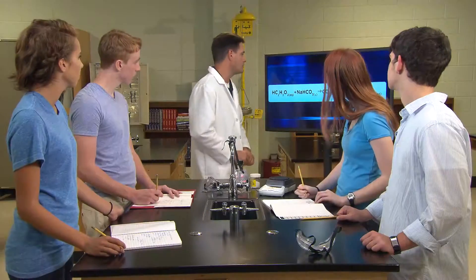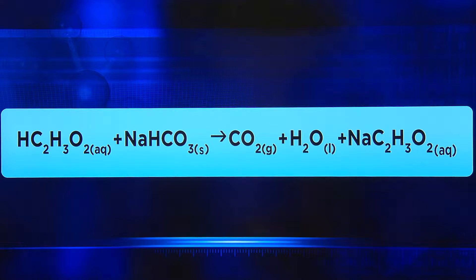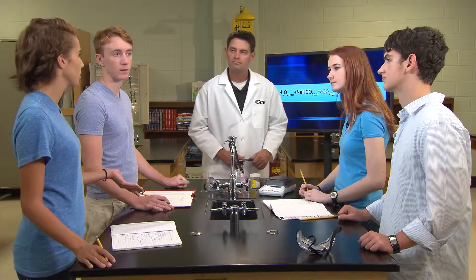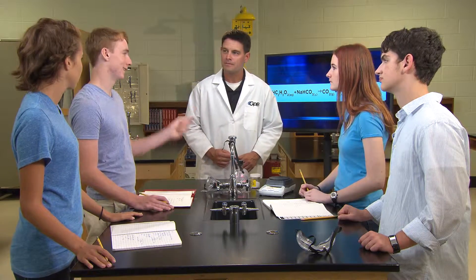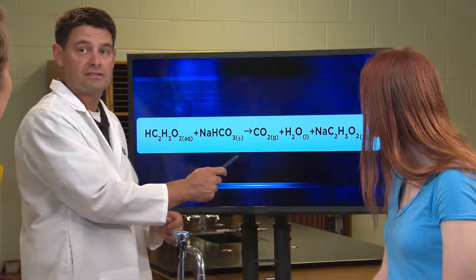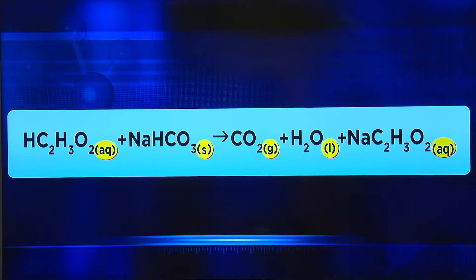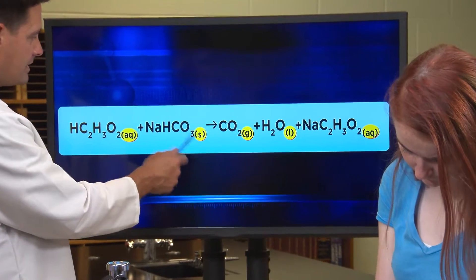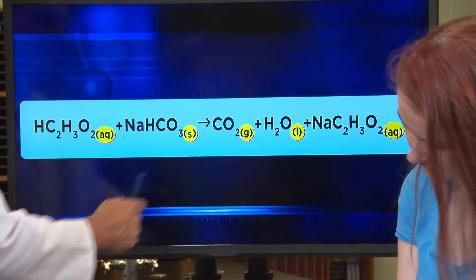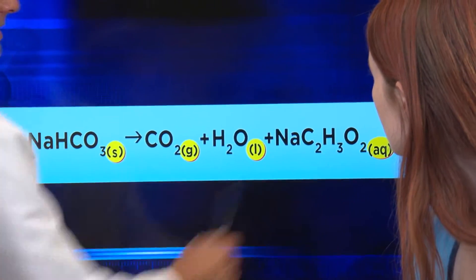Chemists represent this in a balanced chemical equation — like the one on the monitor, which is the reaction we just did in lab. In a chemical equation the arrow is kind of like an equal sign, showing reactants being converted to products. The little letters at the bottom indicate the state or phase each substance is in: (s) for solid, (g) for gaseous, (l) for liquid, and (aq) for aqueous, meaning dissolved in water.